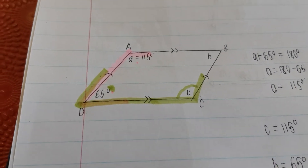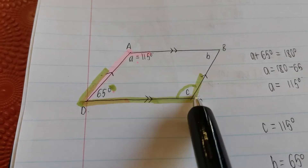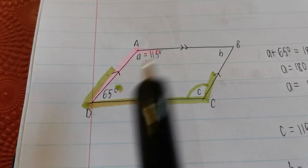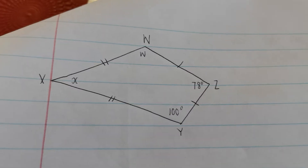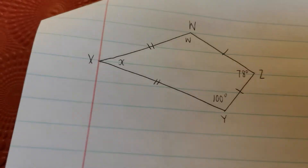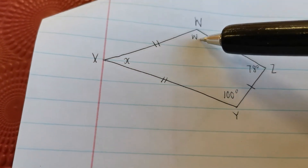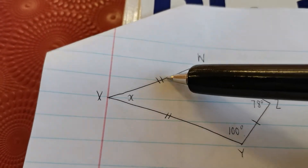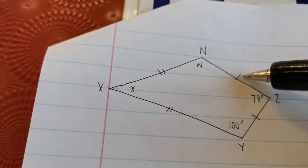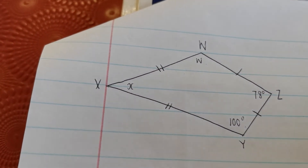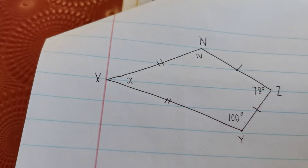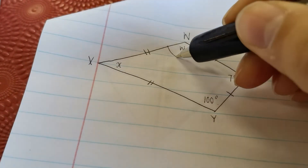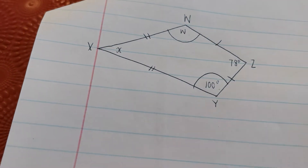Next question: we need to look for X and W. They told us the shape has two sides next to each other equal, and two sides next to each other equal — that makes this a kite. If it's a kite, don't we know that opposite angles are equal? So this angle equals this angle, and this angle equals this angle, because opposite angles of a kite are equal.